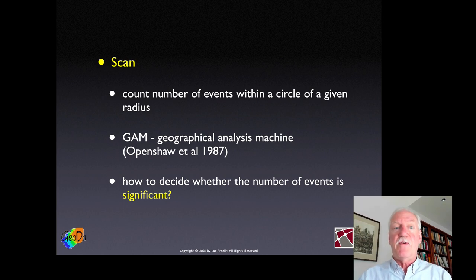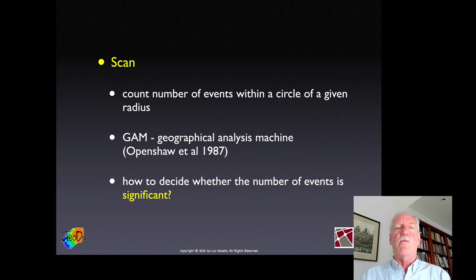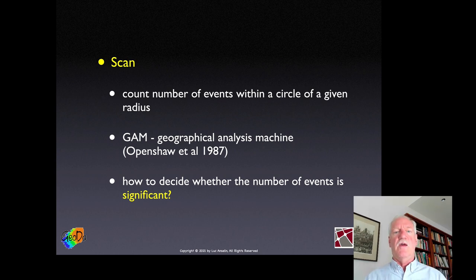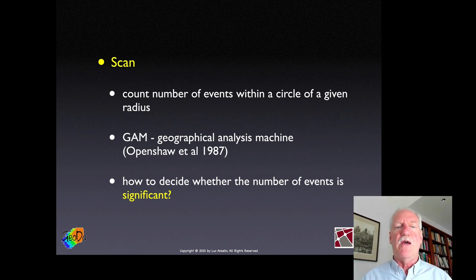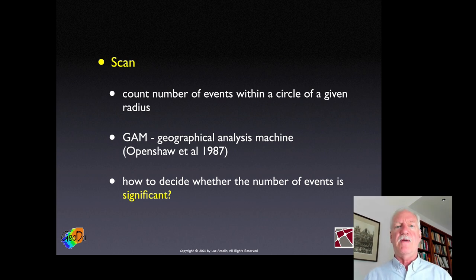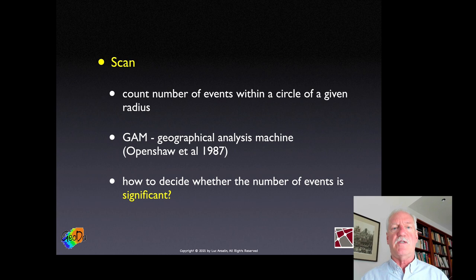We've already seen this in different guises — the uniform kernel was a disk with a given radius where we counted the number of events. That is the same principle underlying the GAM, or Geographical Analysis Machine, suggested by Openshaw and co-workers to find clusters. The problem with the Openshaw approach is that it didn't really have a way to assess significance, whereas the scan statistic families we'll discuss here do.